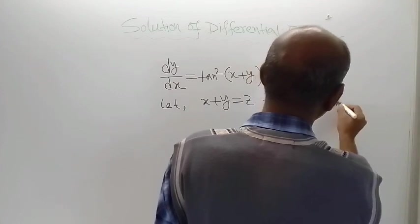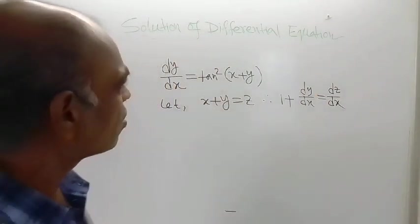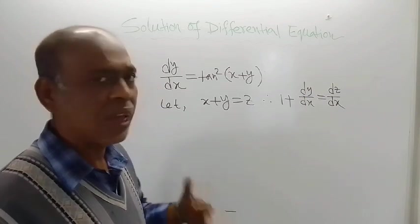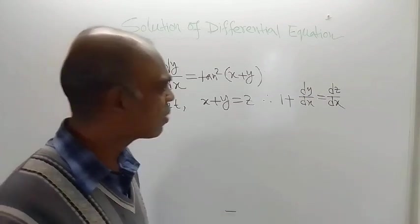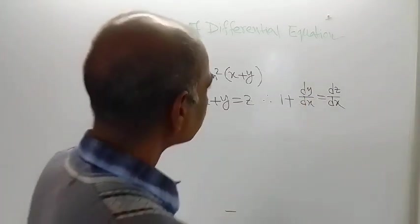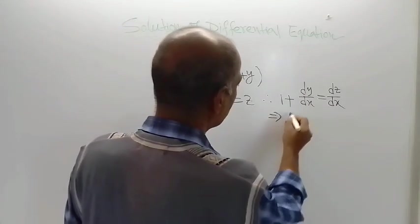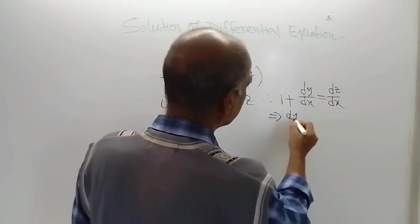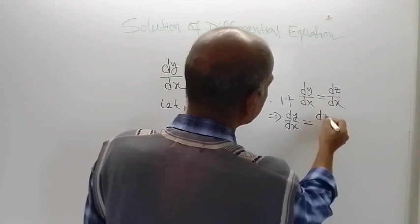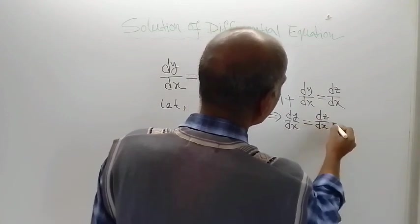So here we are getting dz/dx. This simple substitution will help you solve the given problem. From this, dy/dx is equal to dz/dx minus 1.